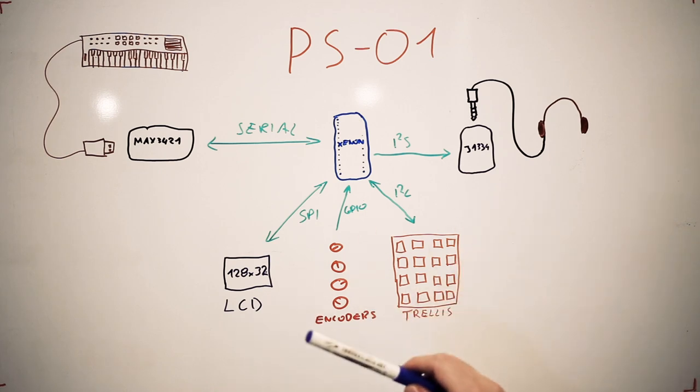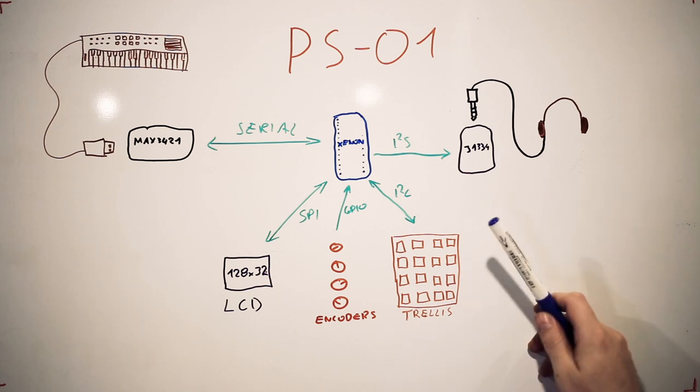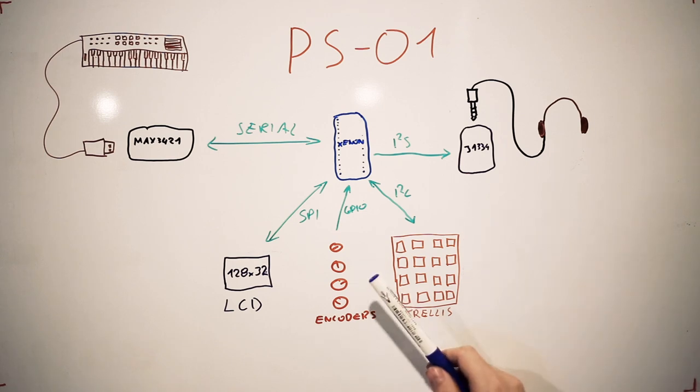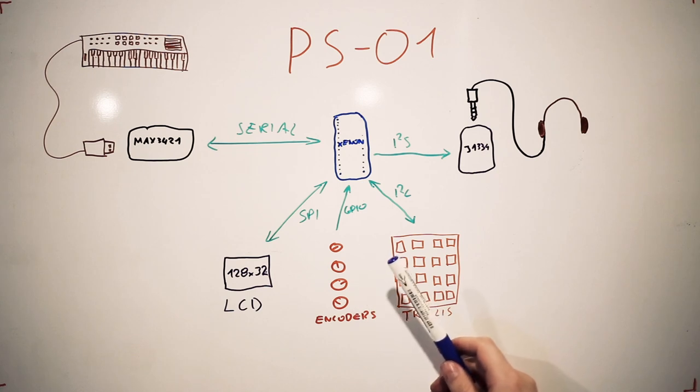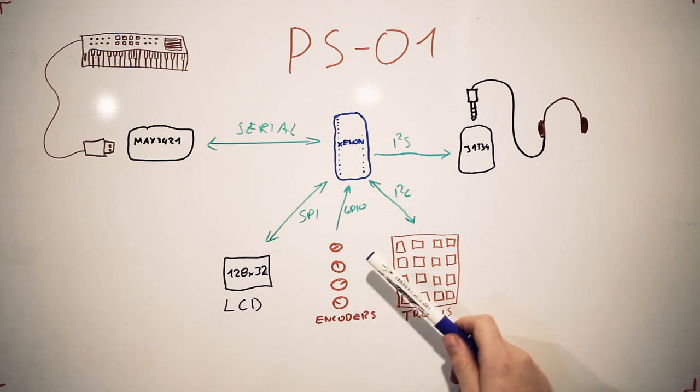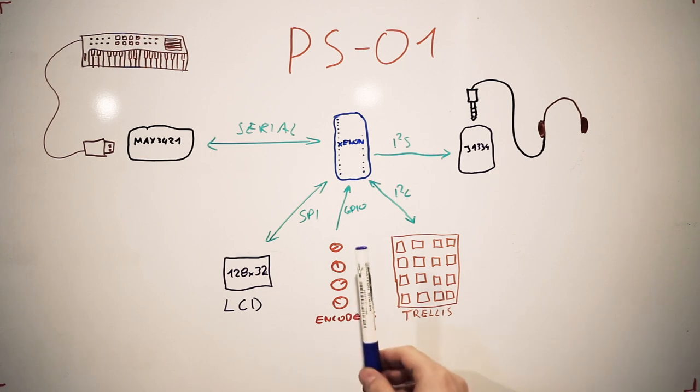To use the synthesizer manually, similar to a pocket operator, we have the Adafruit Trellis 4x4 keyboard with LEDs that talks to Xenon via I2C. We have four rotary encoders connected to Xenon using GPIOs. There are four encoders plus each of them has a button, so we have four more buttons.